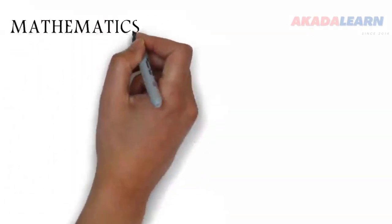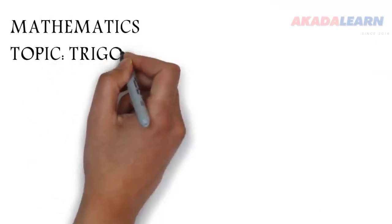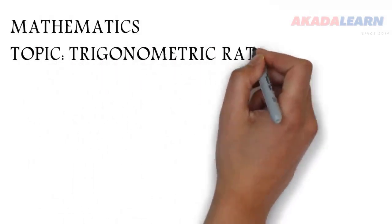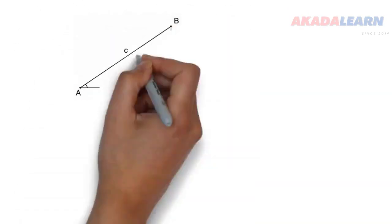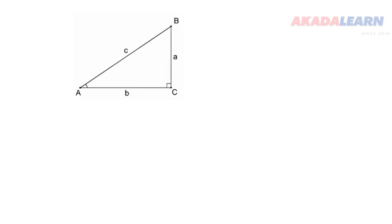Welcome to class. Today we are going to be seeing the three basic trigonometric ratios. So we have a right angle triangle right there. The angle at point A is, let's call it theta.